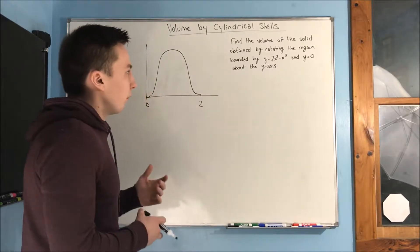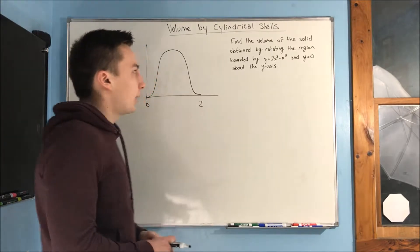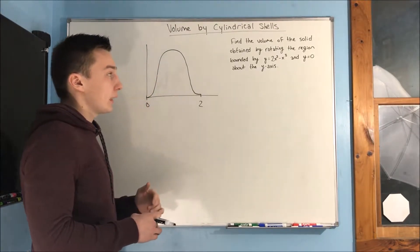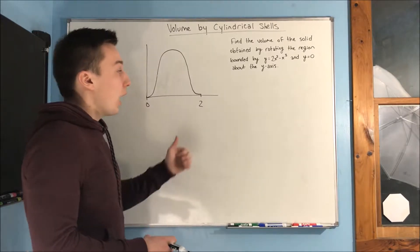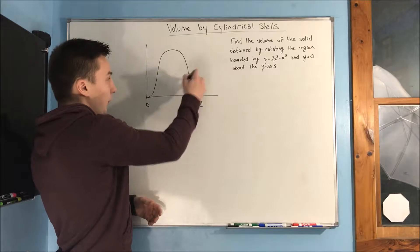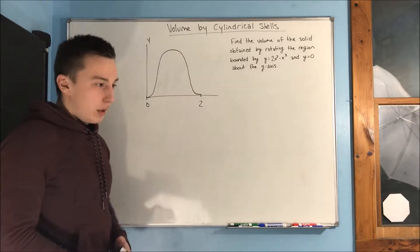So first off, let's look at this problem here. Find the volume of the solid obtained by rotating the region bounded by y equals 2x squared minus x cubed and y equals 0 about the y-axis. So basically, we're taking this region right here and we're rotating it about the y-axis.